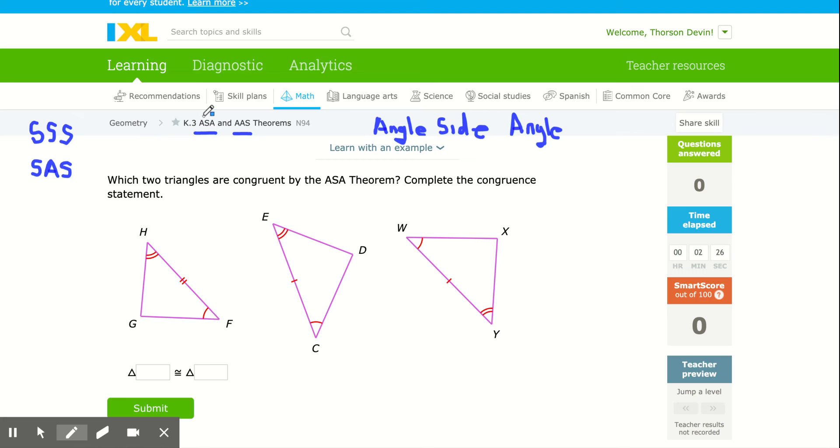What I mean by that is we need to have two angles and the side that is in between the two angles. So I have this angle here, I have this angle here, and I have a side that goes in between the two angles.